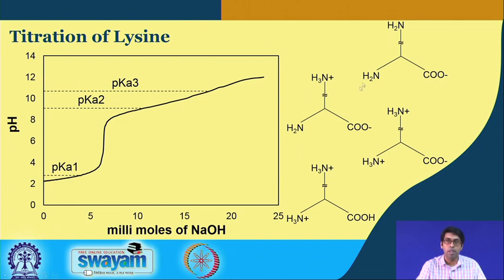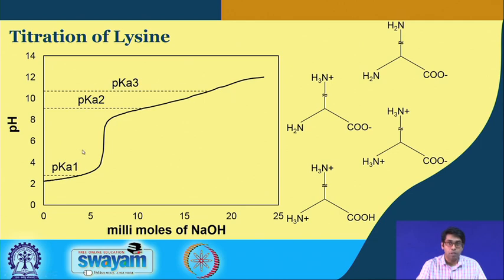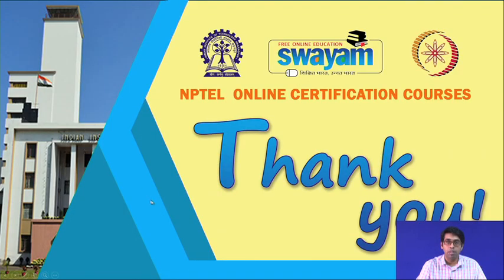Our pI for lysine will be an average of pKa2 and pKa3. We determined pKa2 as roughly 9 and pKa3 as somewhere around 10.2. So the pI of lysine will be the average of 9 and 10.2. That is all for week 2. Thank you, we will see you in the next week.